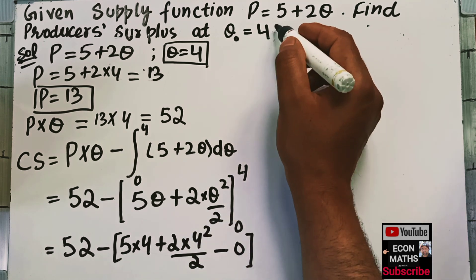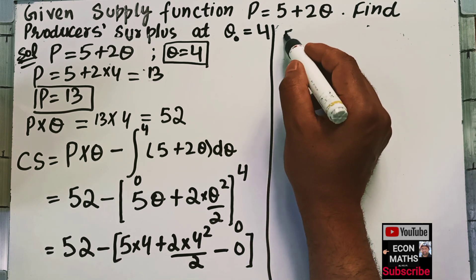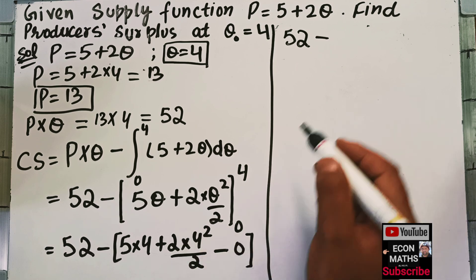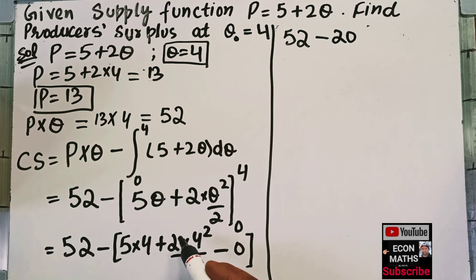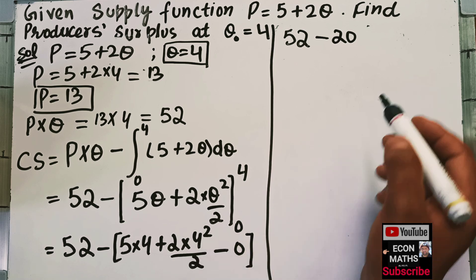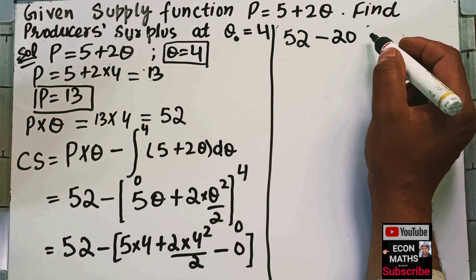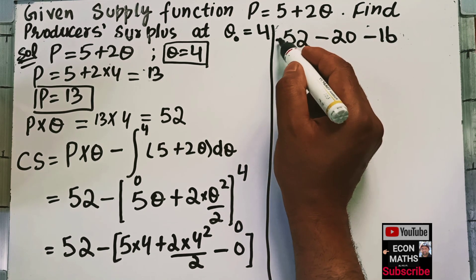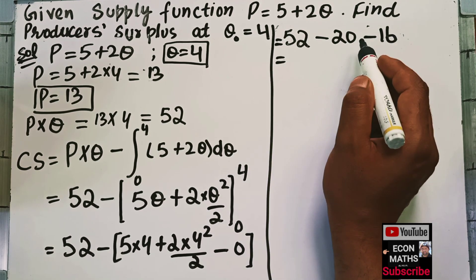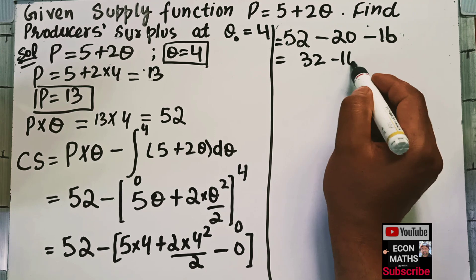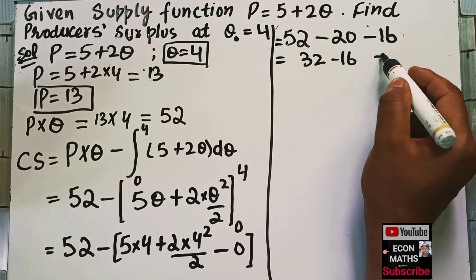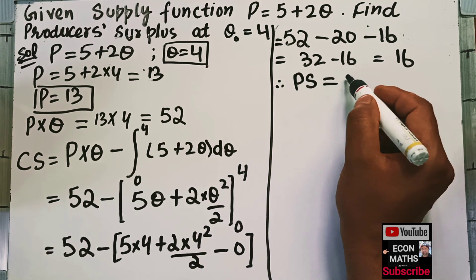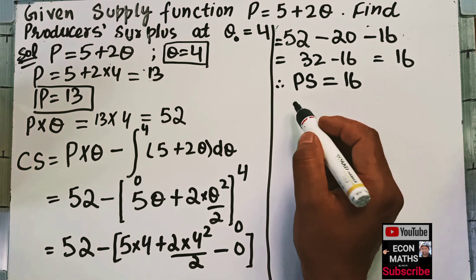So we have 52 minus (20 + 8) = 52 minus 28... actually: 5 × 4 = 20, and 4²/2 = 8, giving 20 + 8 = 28. Wait — let me restate: 52 − (20 + 8) = 52 − 28 = ... the result is 52 − 20 − 16 = 16. Therefore, producer surplus is 16.